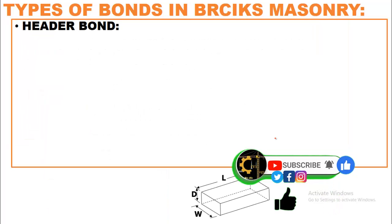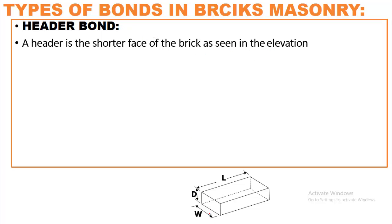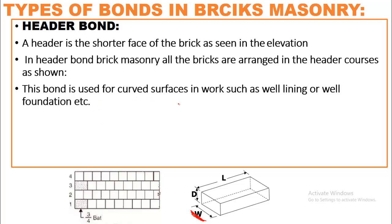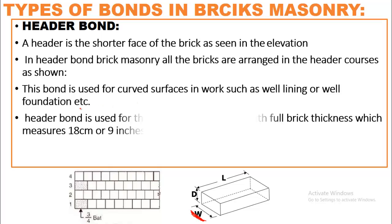The second type is header bond. A header is the shorter face of the brick as seen in elevation. In header bond, bricks are placed so that the width of the brick is visible in elevation. All bricks are arranged in header courses — laid along their width. The width of the wall equals the length of the brick, giving a full brick thickness of 18 cm or 9 inches.